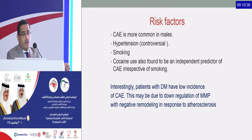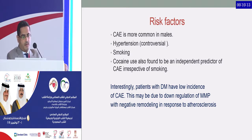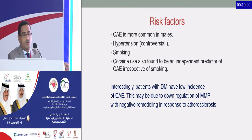Risk factors include male sex, hypertension — though hypertension is controversial as some literature considers it a low risk factor — and smoking, which is a stronger risk factor. Cocaine use is also an independent predictor of ectasia irrespective of smoking. Interestingly, patients with diabetes have a low incidence of ectasia, possibly due to down-regulation of matrix metalloproteinase with negative remodeling response.